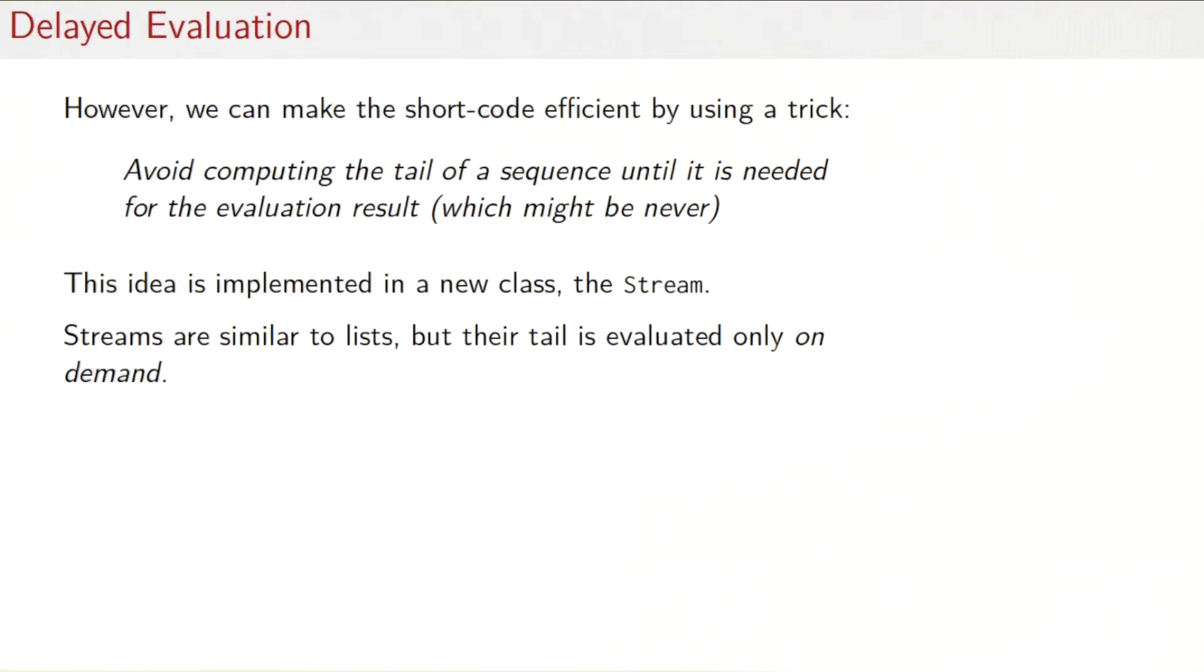However, there's a special trick that can make the short code also efficient. The idea is that we want to avoid computing the tail of a sequence until that tail is needed for the evaluation result. And of course, that might be never. That idea is implemented in a new class, which is called the stream. Streams are similar to lists, but their tail is evaluated only on demand.